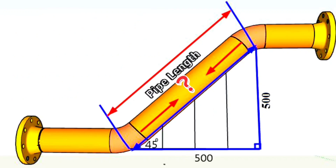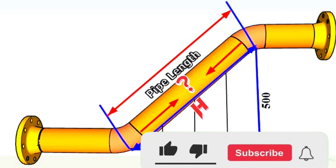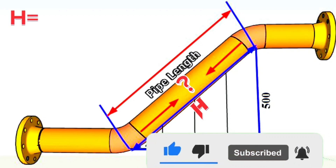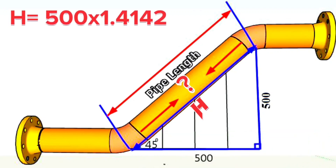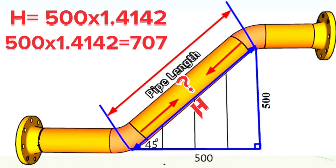There is another way to find the hypotenuse of a right-angled triangle with equal perpendicular sides. Different formulas are used for this. To find the length of the hypotenuse, you need to multiply the length of the perpendicular side by 1.4142. That is, H is equal to 500 multiplied by 1.4142. We continue the calculation and find that 500 times 1.4142 is equal to 707 mm.